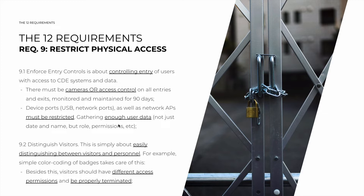9.2 is about distinguishing visitors — making sure that visitors are easily distinguished from personnel, to not allow them to blend in in case they want to cause trouble. They're clearly identified; for example, simple color coding of badges takes care of this: personnel have blue badges, visitors have red ones. But besides this, visitors should also have different access permissions, as well as be properly terminated when they leave. The company must ask for their badge back — not doing so is a very clear fail of this requirement. You cannot let somebody leave with a credential that gives them access to your premises.